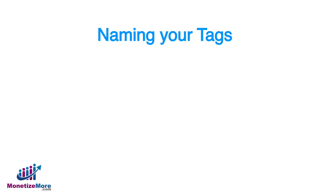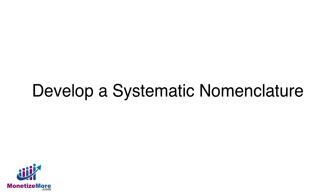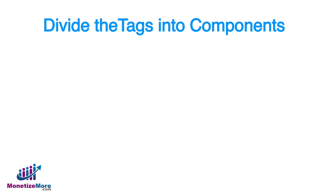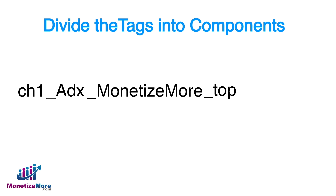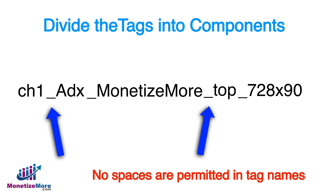It's important to name your tags in a meaningful way to both identify them and keep track of them. You'll want to develop a systematic nomenclature for these tags. We recommend you divide the tag into components and stick with the same system for all your tags. For instance, we've developed the following sample tag name: CH1, ADDX, MONETIZE MORE, TOP, 728 by 90. Notice that we use underscores to separate our labels, as you cannot incorporate spaces into the tag names.